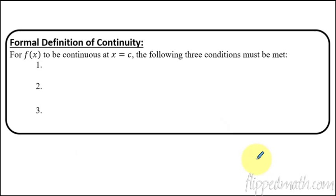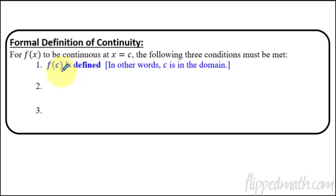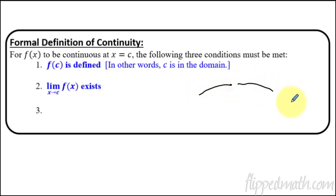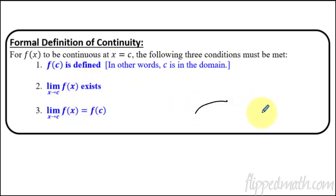Now we're going to use some fancy math terms to help us define continuity at a specific point. It has to meet three conditions. The first is that F of C is defined — C is somewhere in the domain, not an open hole with nothing existing. C exists. Then the limit has to exist, meaning you're going to the same place from both sides. And lastly, that limit as X approaches C must equal that defined point F of C from condition one.